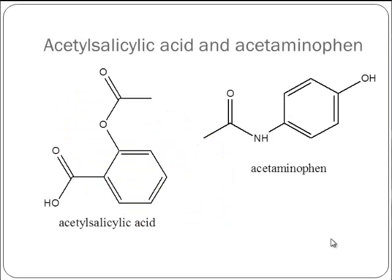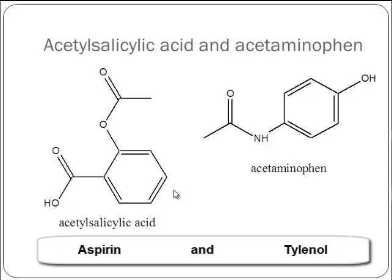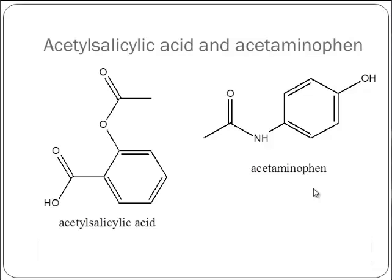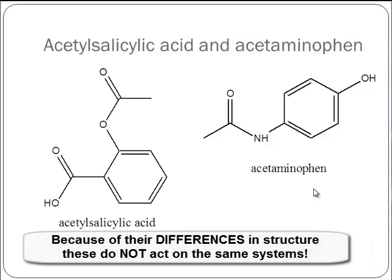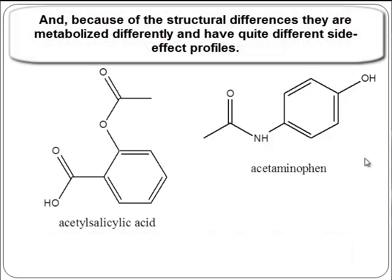Here are two molecules sometimes considered very similar but actually quite different. The one on the left — acetylsalicylic acid — is aspirin; the one on the right — acetaminophen — is Tylenol. They're both analgesics and fever reducers, but they do not act on the same system in the body. Aspirin can handle prostaglandin-induced pain that acetaminophen cannot touch. Acetaminophen can cause liver toxicity; aspirin can cause blood clotting issues. They have very different groups, and it's those differences that make their mechanisms of action different.